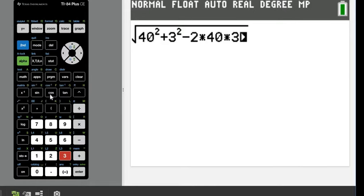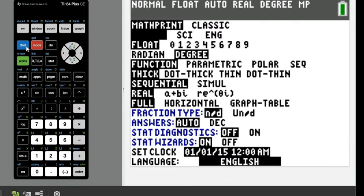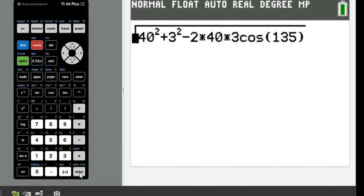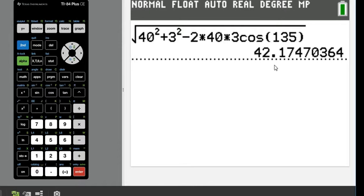After entering this, verify you're in degree mode. I'll do cosine of 135 degrees. Make sure you're in degree mode, not radian mode, because radian mode would give you the wrong answer. Then hit enter, and you get 42.1747.